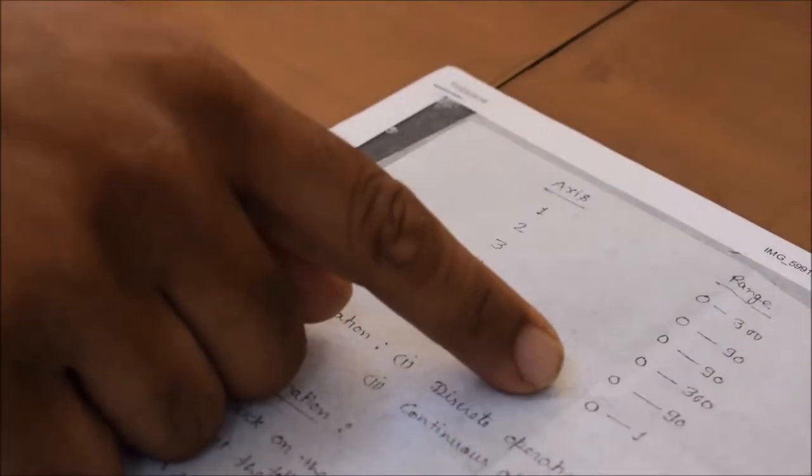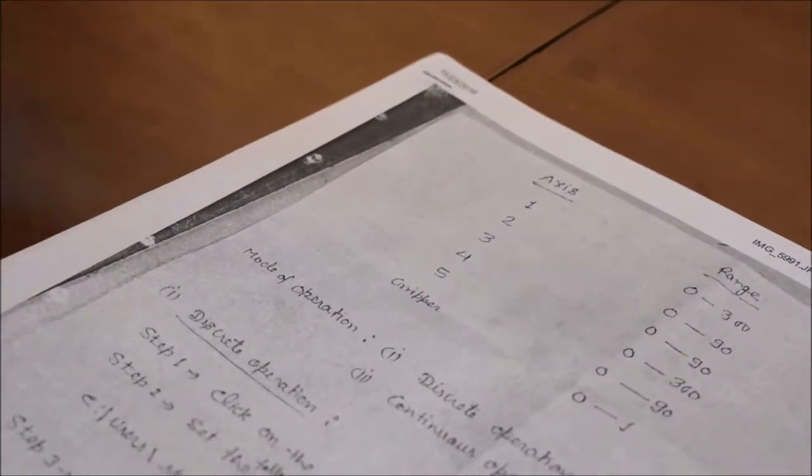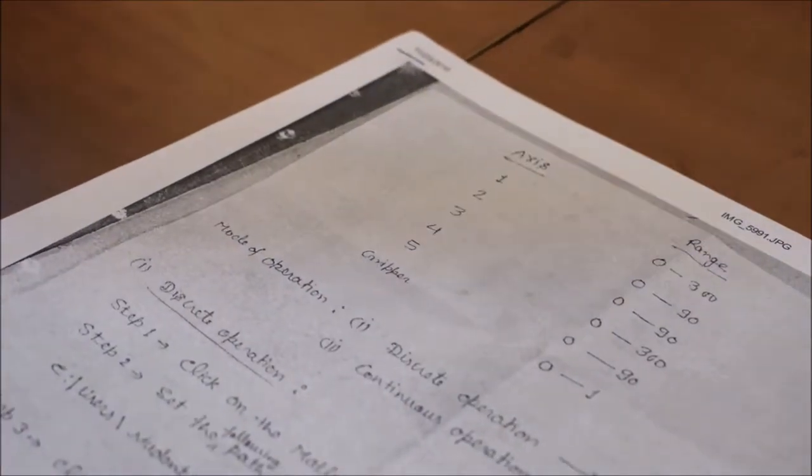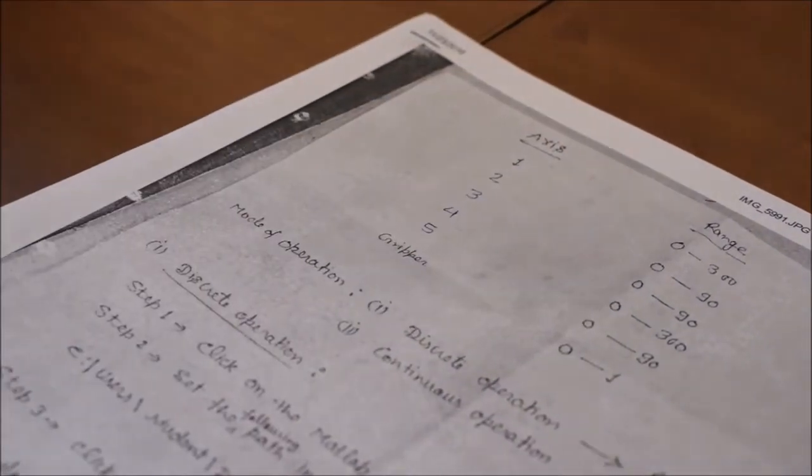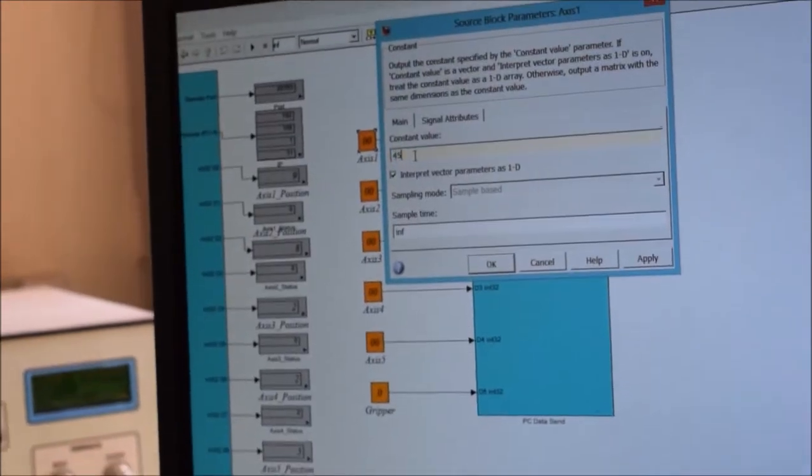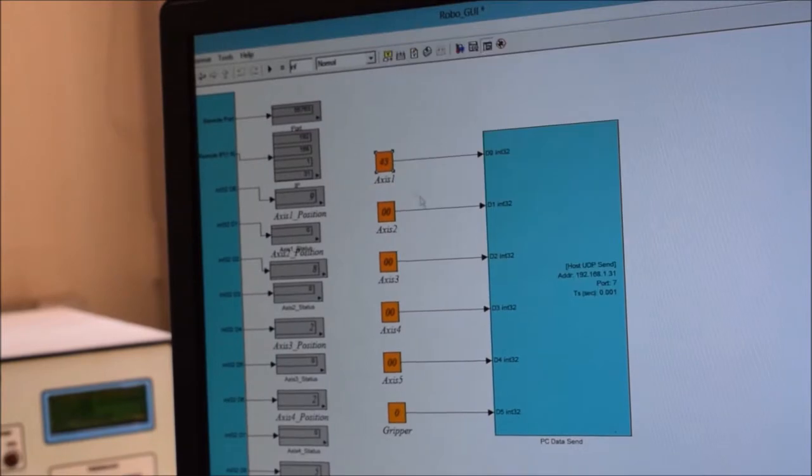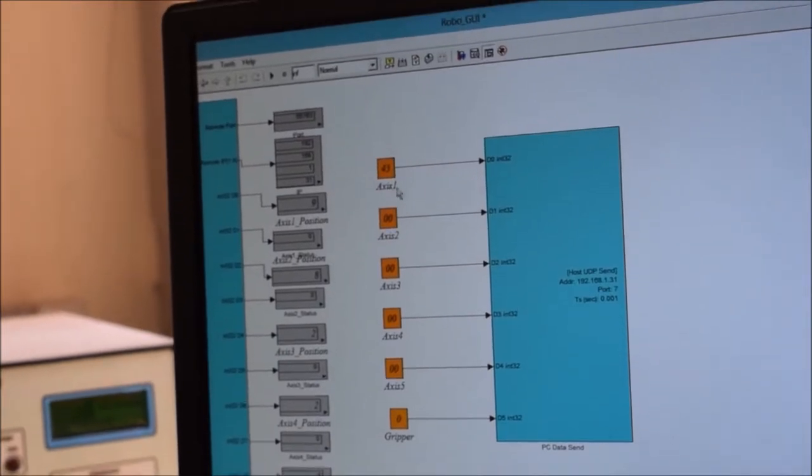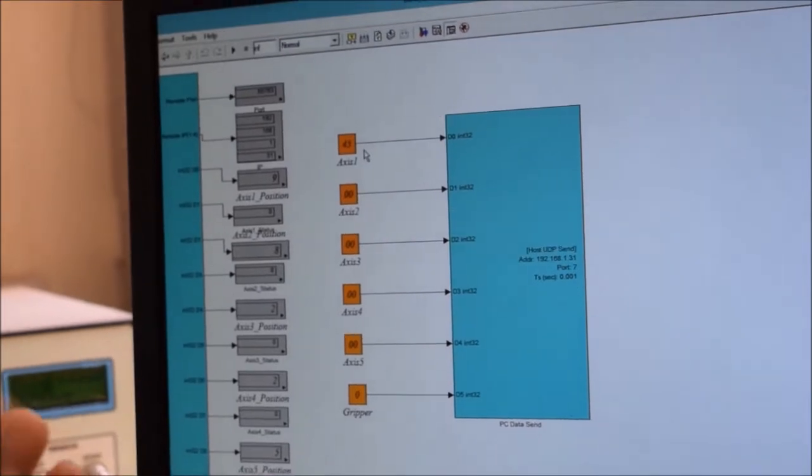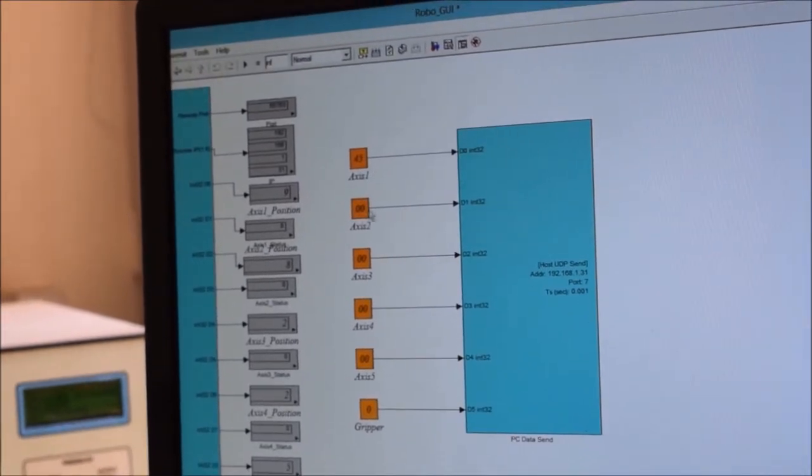And the gripper is 0 or 1. When you providing the 0, that means your gripper is off. When you providing the 1, that means your gripper will be activated. So, this is the coding. And now, I show you. Double click on that. When you provide the angle here, suppose I want to provide 45. So, it is 45 degrees. Your first axis, your first motor which connected to the axis one, it rotates 45 degrees.